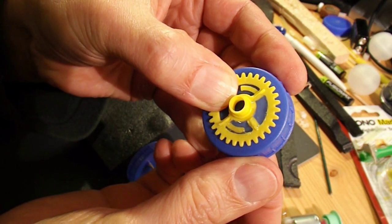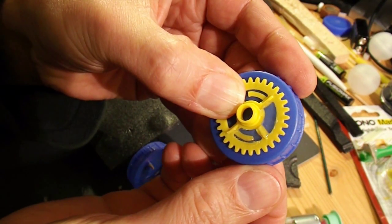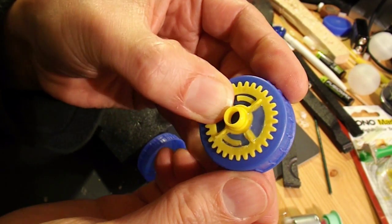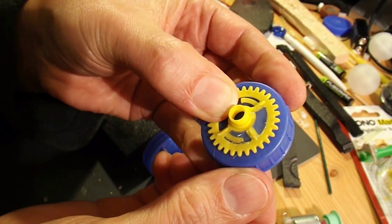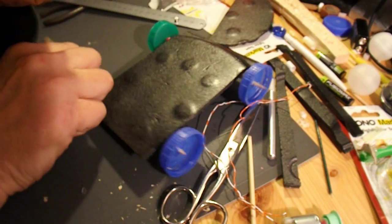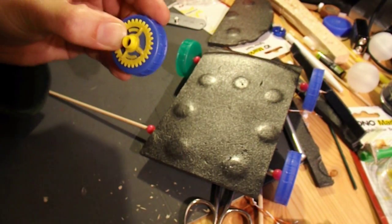Right, I'm hot gluing that gear wheel directly to the side of the milk bottle top before I actually slide it onto the barbecue skewer.